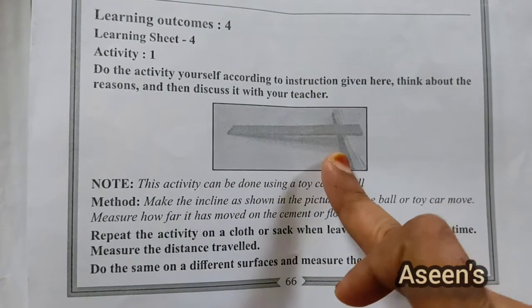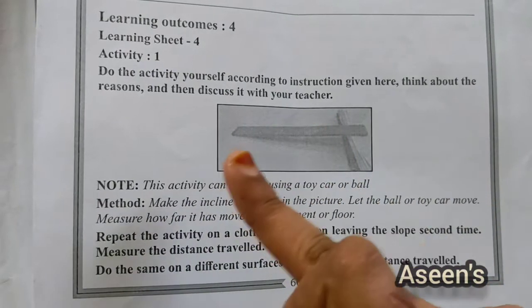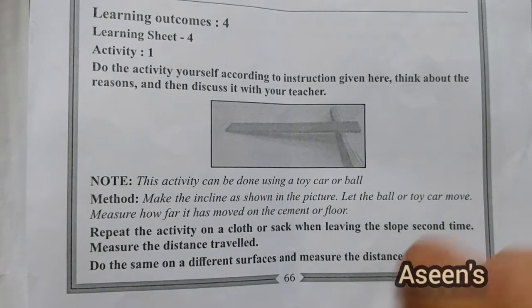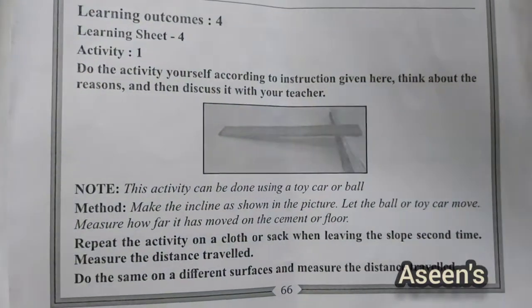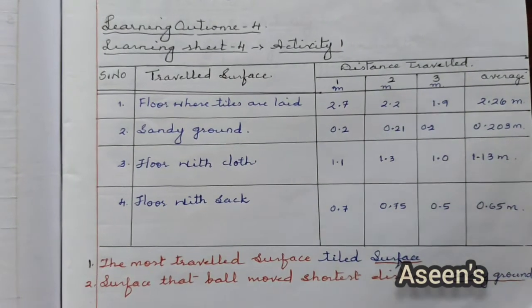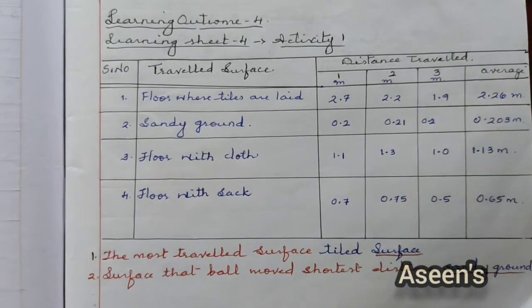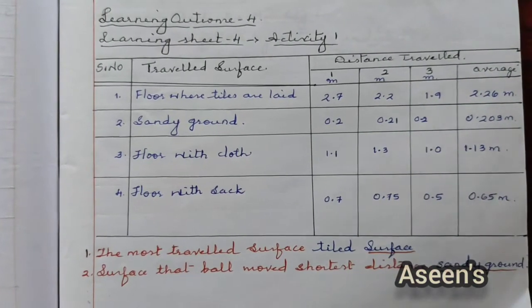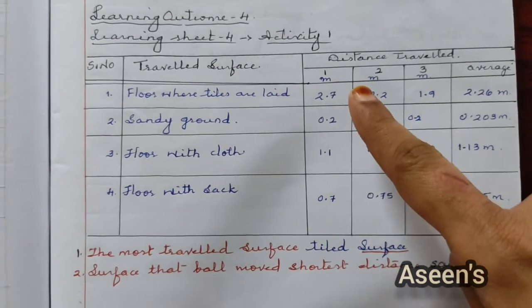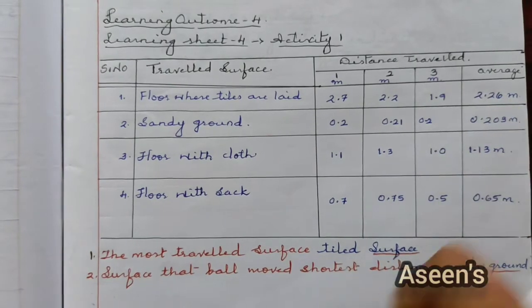Under Learning Sheet 4, Activity 1, we have an inclined plane and you are supposed to use a ball or a toy car and make it travel on different surfaces. I did this with a toy car and the distance was nearly 2.7 to 2.8 meters. You can see the readings here in meters, along with the average readings.